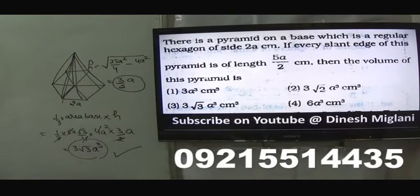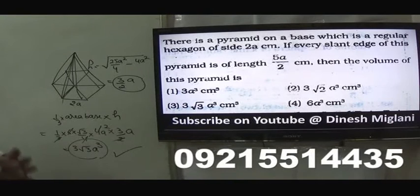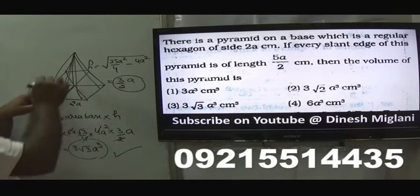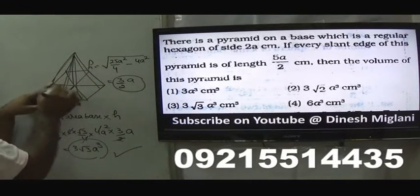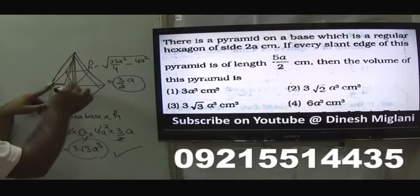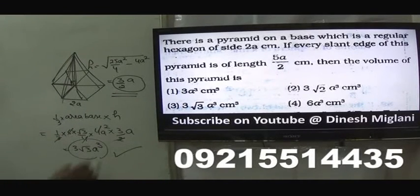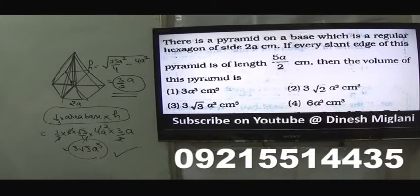Third option is my answer, 3√3 a³. In this question, we had to find the height of the pyramid using Pythagoras, since the slant edge and base side were given. Once we have the height, we apply the pyramid formula: (1/3) × area of base × height.